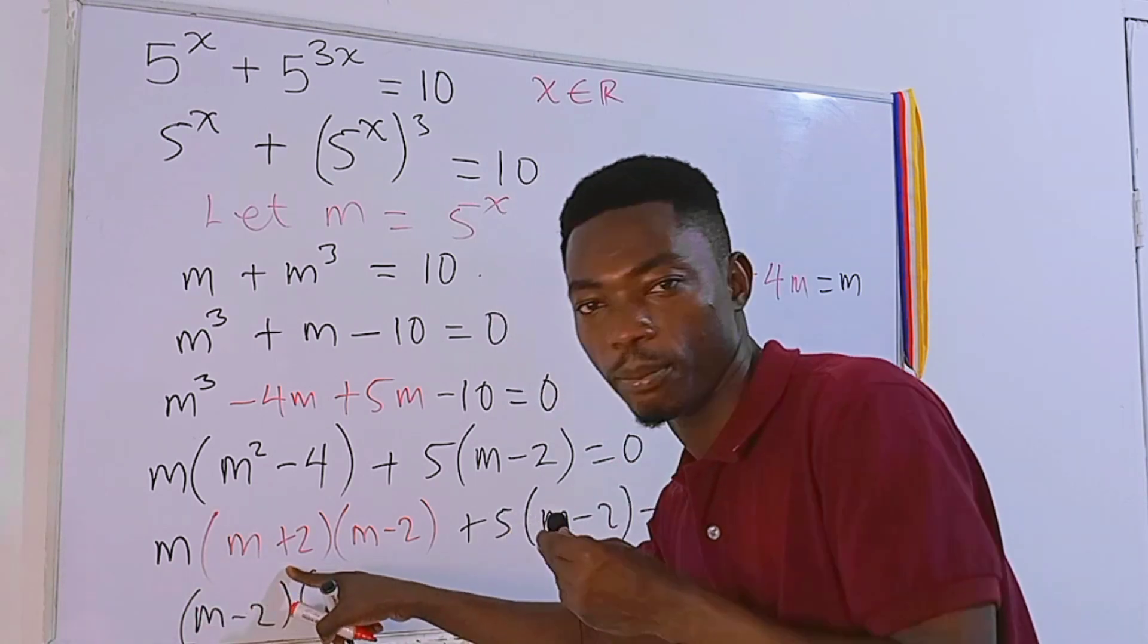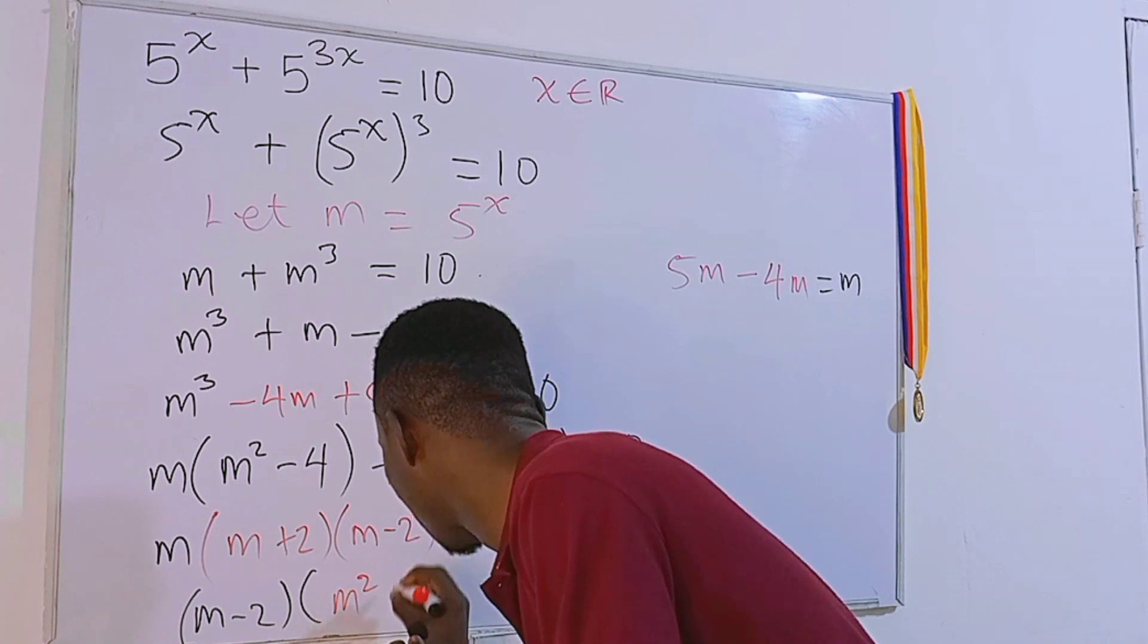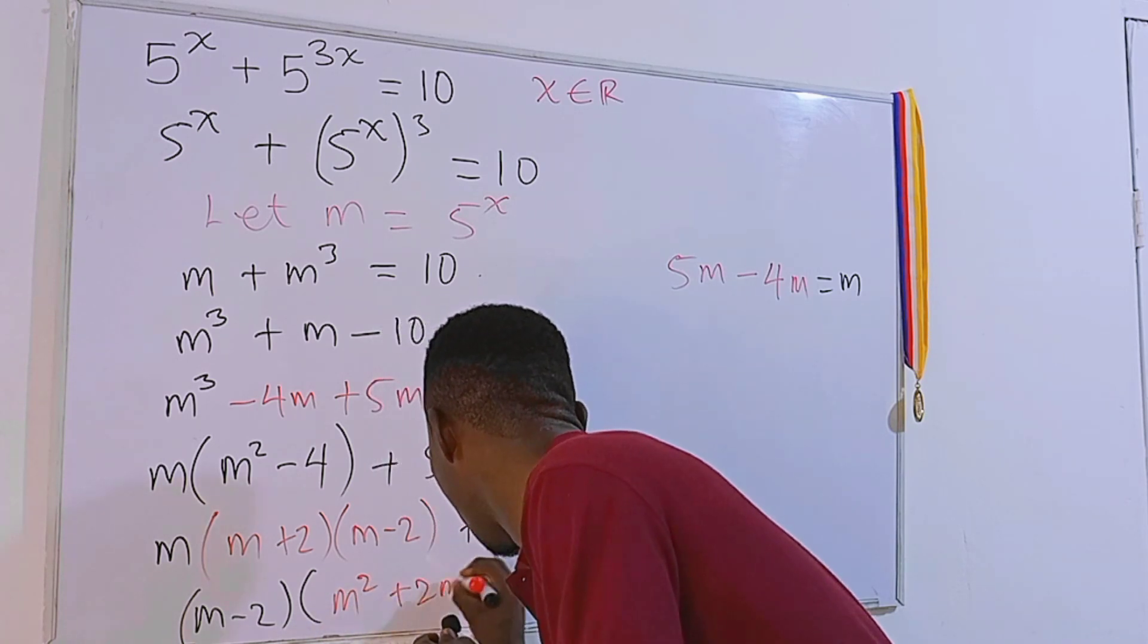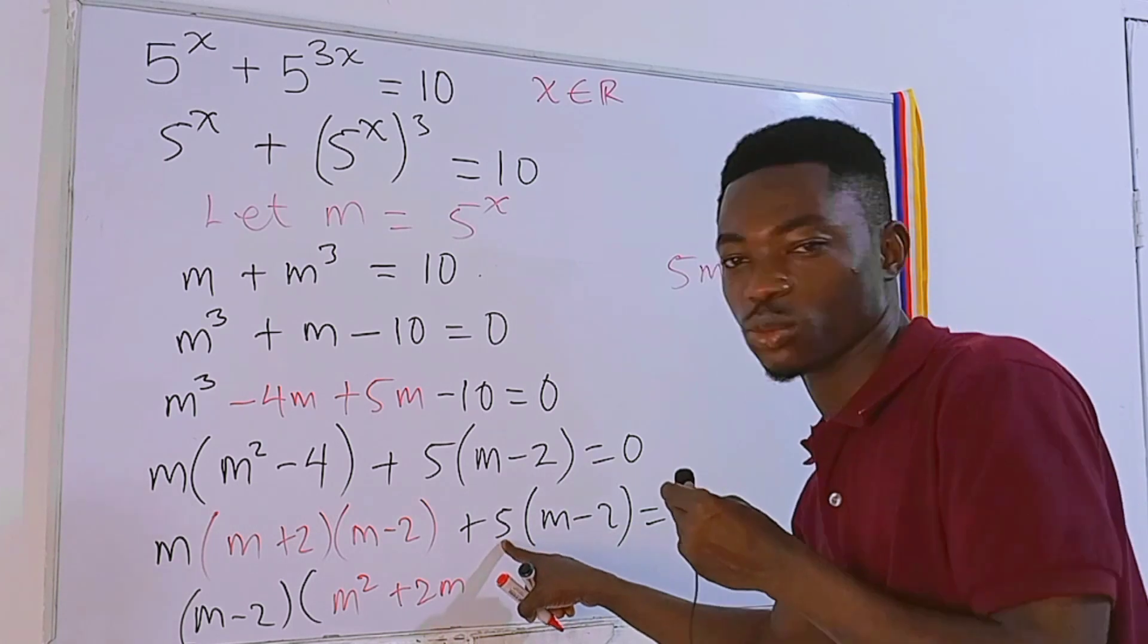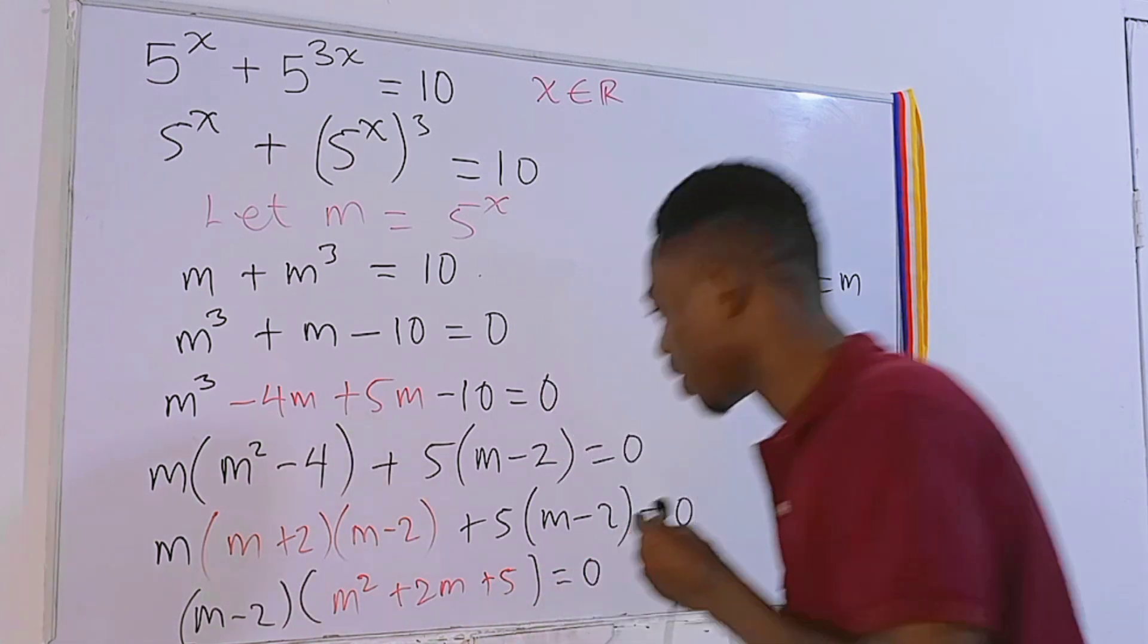So we have (m - 2), then here we're left with m times (m + 2), which is the same thing as m² + 2m, and here we're just left with 5, so I'm going to put +5, and this equals 0.